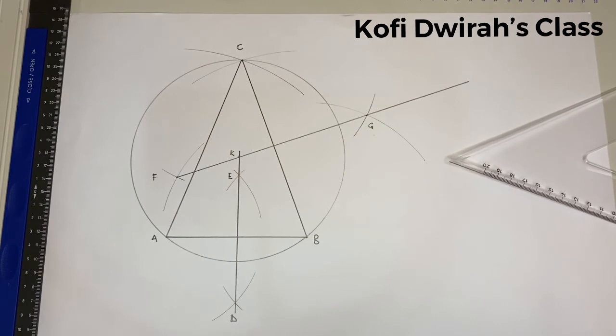So this is how to construct a circle that circumscribes a triangle.